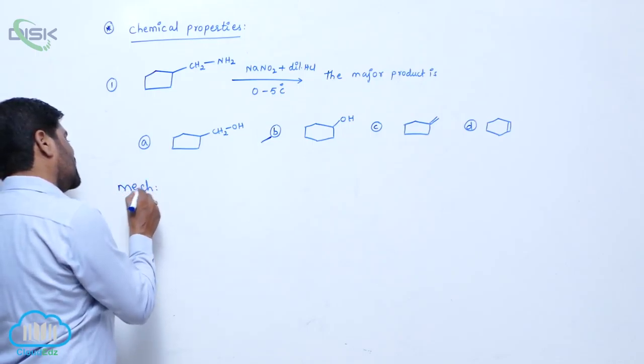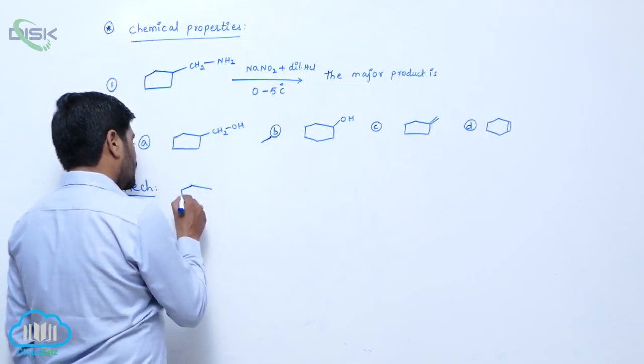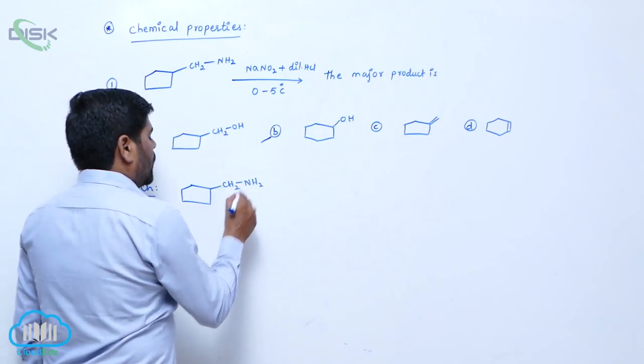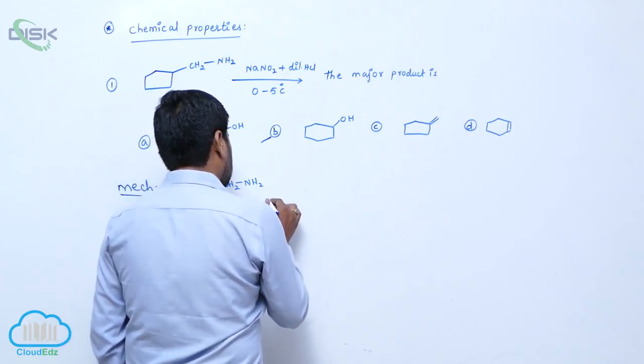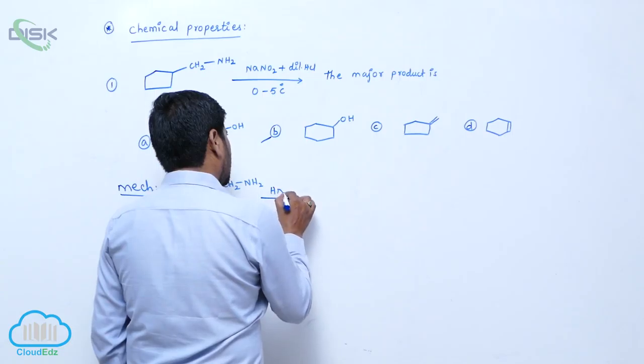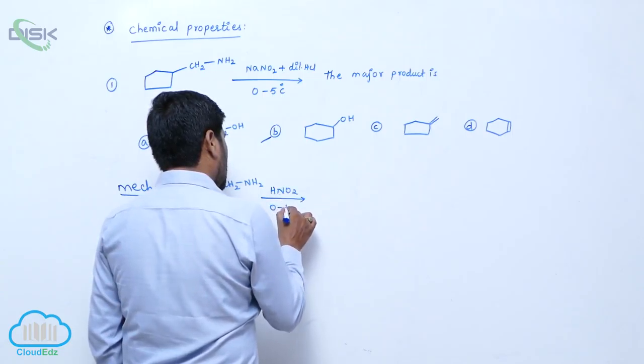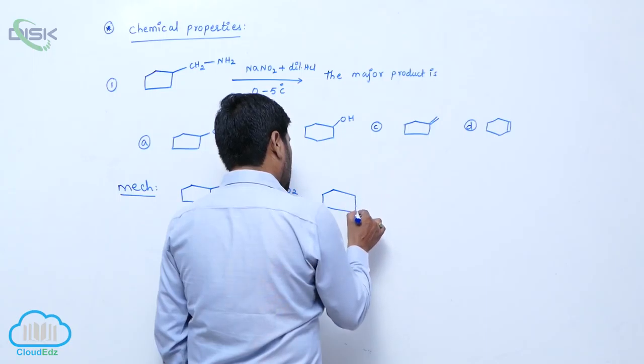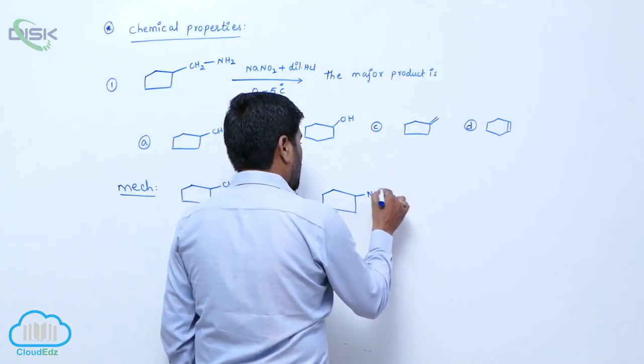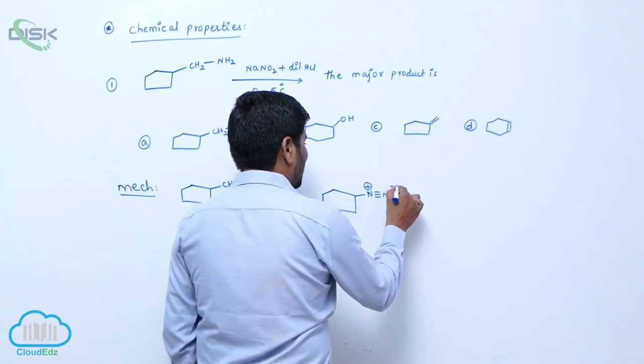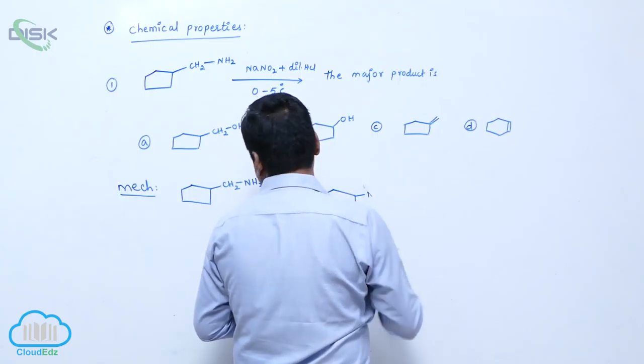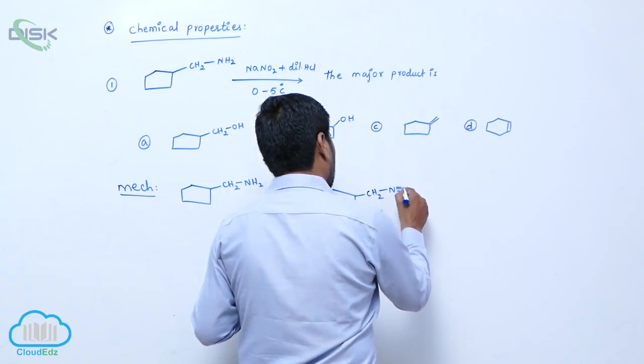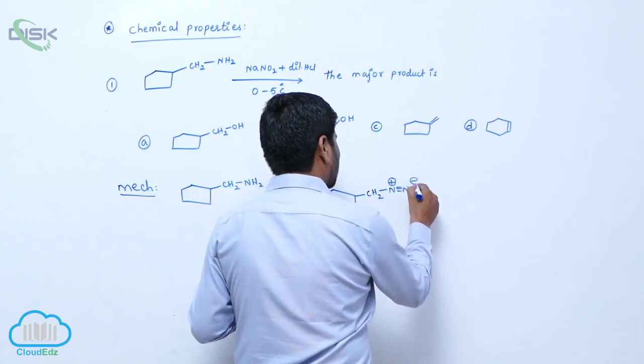Now, when we go for the mechanism of this one, cyclopentylmethylamine reacts with nitrous acid. Then compulsory we are maintaining 0 to 5 degrees centigrade. So therefore initially it forms a diazonium. Then N triple bond N positive charge, then Cl minus. CH2 N triple bond N positive charge, here is Cl minus.